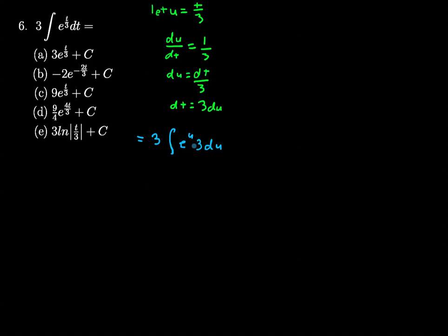Here I have this constant multiple of three, and with an integral with a constant multiple, I can bring that out to the front. Bringing this out and multiplying, I'll end up with three times three, which gives me nine times the indefinite integral of e to the u du.